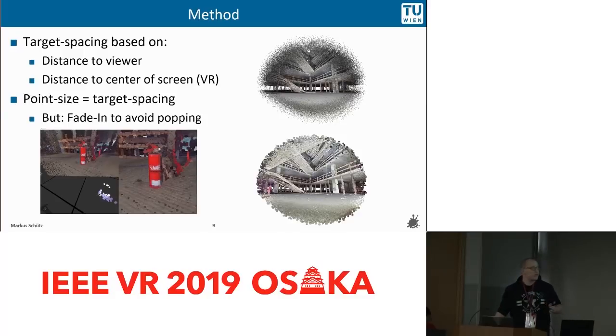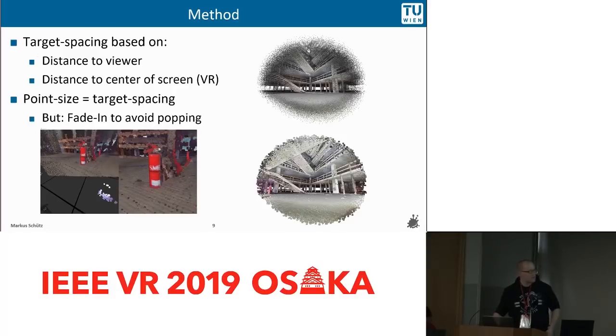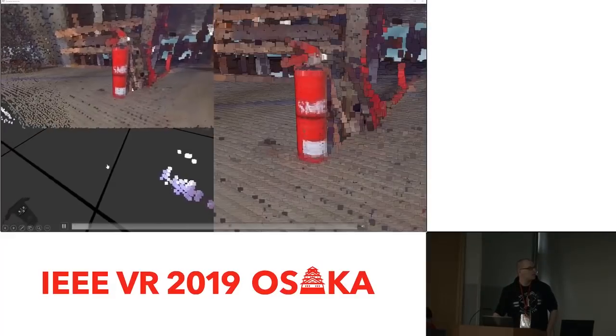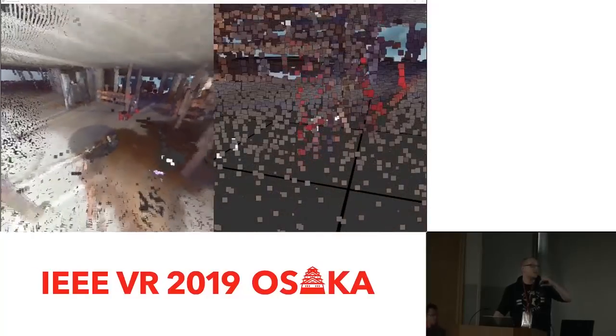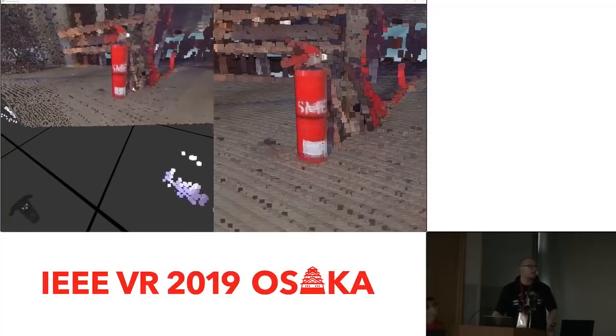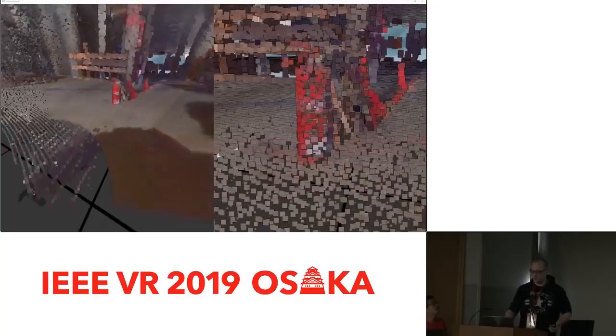To fix this, we also fade points in by growing and shrinking them. As a user moves away from this fire extinguisher, points are removed but don't disappear immediately — they shrink. And as the user approaches the fire extinguisher, they grow again.